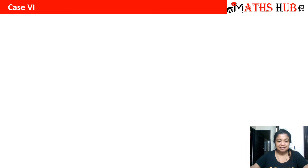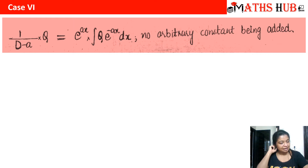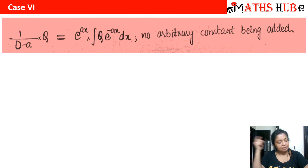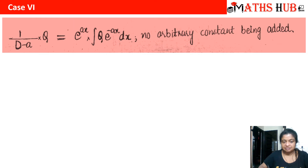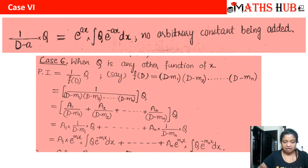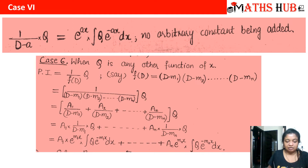Now I'll tell you about Rule 6, Case Number 6. Whenever we have a linear term in our f(d) function — we know that 1 by d simply becomes an integral — when we have a linear expression as 1 upon (d minus a) times q, it opens as e to the power ax multiplied by integration of q times e raised to power minus ax dx. If we have a product of many linear terms, we can use partial fractions to split them up, and then every term gets converted to this integration formula: 1 upon (d minus a) into q equals e raised to power ax times integration of q times e raised to power minus ax dx.